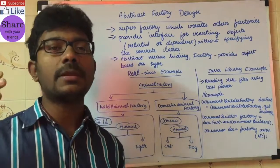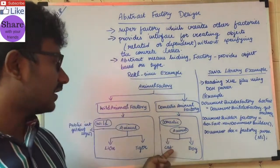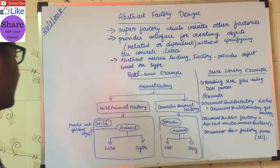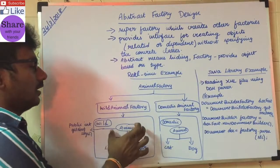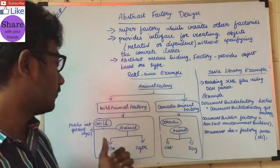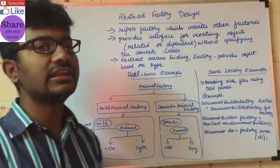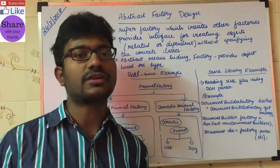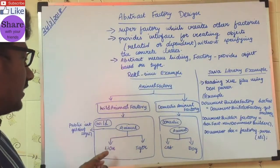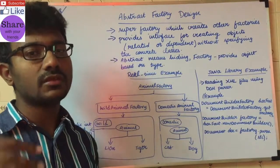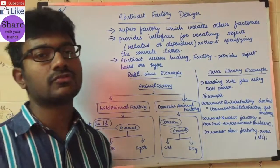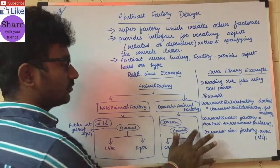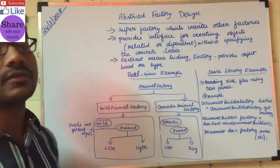The Animal interface has a common method. For example, the method is: public int getNumberOfLegs(). In this Animal interface, getNumberOfLegs is a method. The Cat concrete class returns 4. The Dog concrete class also returns 4. Lion and Tiger concrete classes return 4 as well. Some animals may have 2 legs — those would return 2. So Animal interface has Cat, Dog, Lion, Tiger as concrete classes.